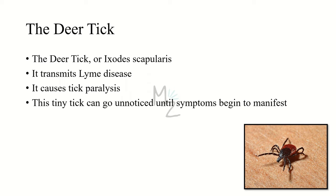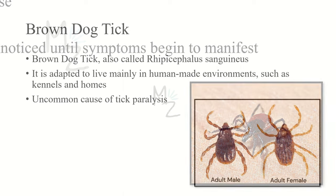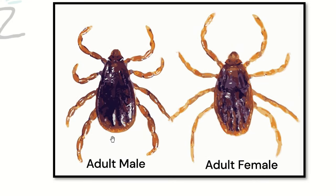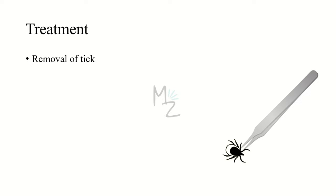The deer tick, also called Ixodes scapularis, transmits Lyme disease and is also responsible for causing tick paralysis. This tiny tick can go unnoticed until symptoms begin to manifest. The last species is the brown dog tick, also called Rhipicephalus sanguineus. It is adapted to live mainly in human-made environments such as kennels and homes. It is responsible for causing paralysis but is not as common. Here you can see its adult male and adult female.